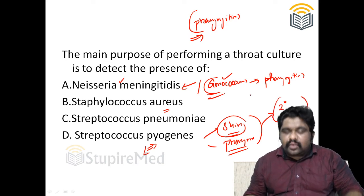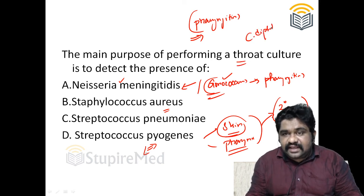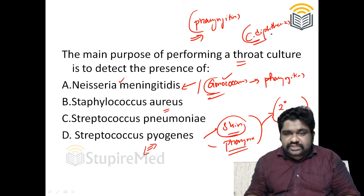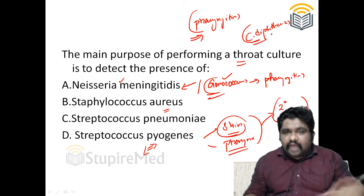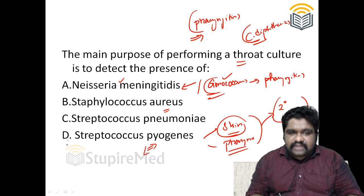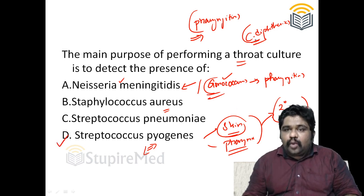One other organism to think of when performing a throat culture is Corynebacterium diphtheriae or diphtheroid organisms. So the two first-line organisms you have to think of when performing a throat culture to detect the presence of organisms — the answer would be Streptococcus pyogenes and Corynebacterium diphtheriae.